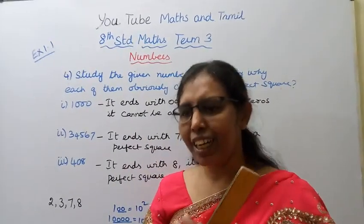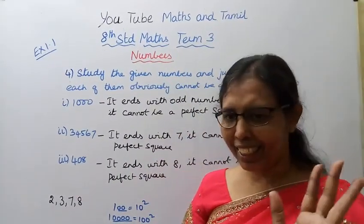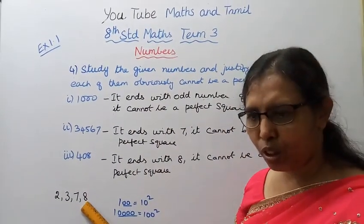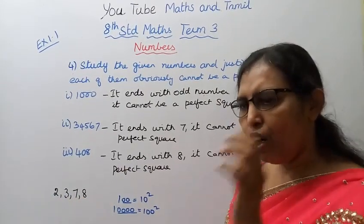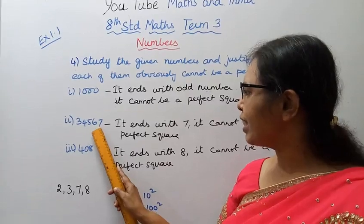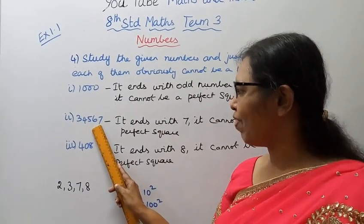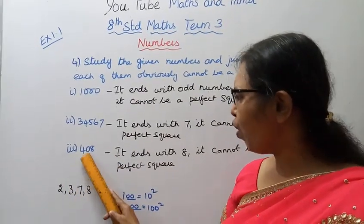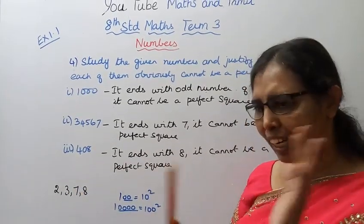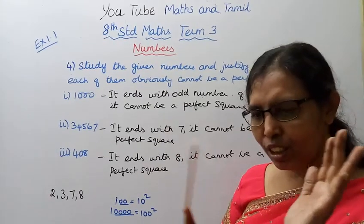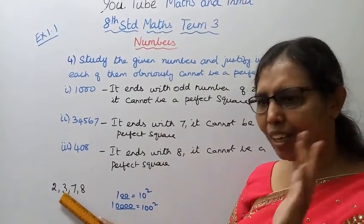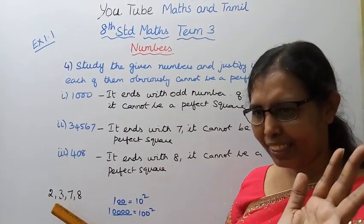A number ending in 2, 3, 7, or 8 cannot be a perfect square. If a number ends with any digit other than 0, 1, 4, 5, 6, or 9, it cannot be a perfect square. For example, numbers ending in 7 or 8 — like 408 ending in 8, or a number ending in 7 — these are not perfect squares.